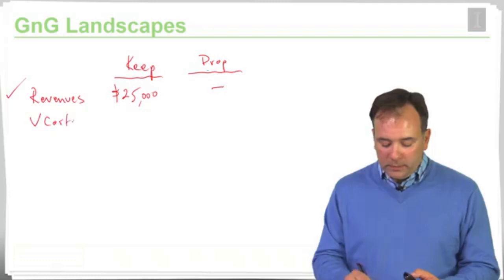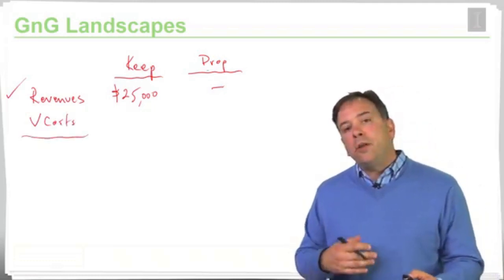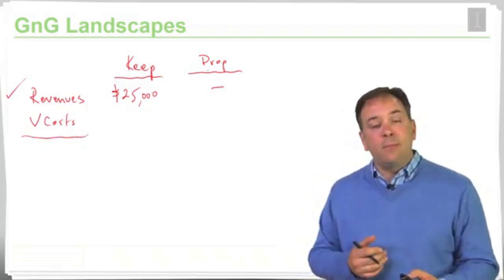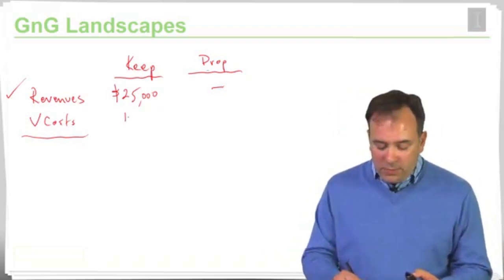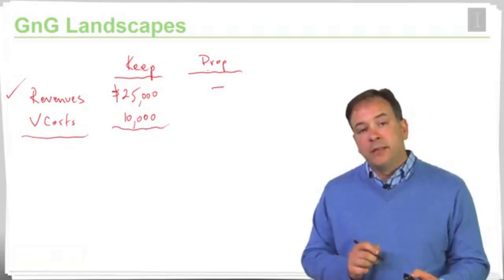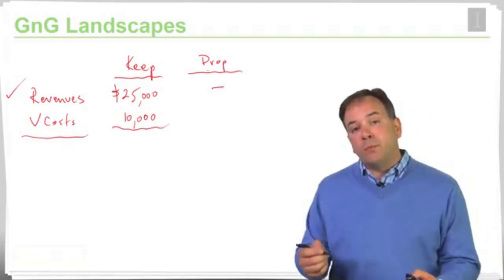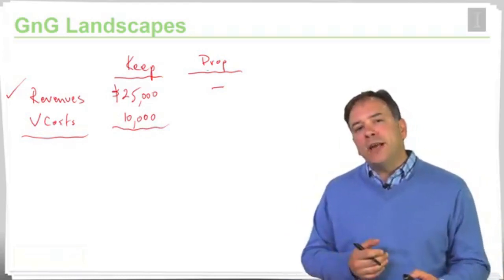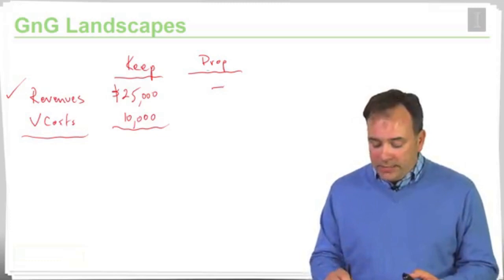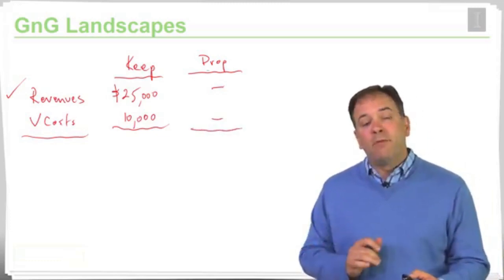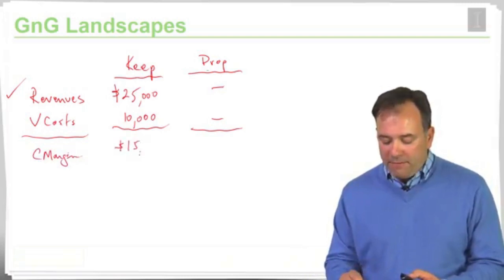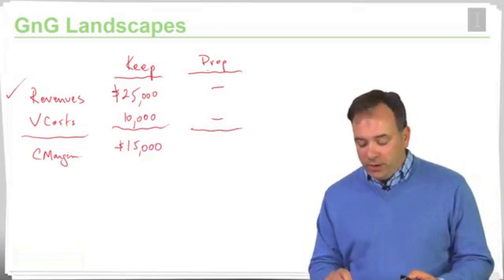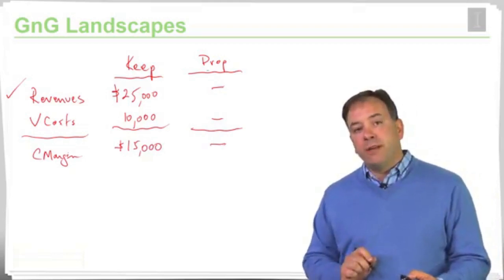The variable costs, by definition, correlate with the activity of interest that we're engaged in, and that is having this product line around. So if we were to keep the product line, let's assume that we were to incur the same $10,000 in variable costs. And if we were to drop this product line, we would no longer be engaged in activities that generate those variable costs. So our contribution margin, if we were to keep, we would have $15,000 in contribution margin, and zero in contribution margin if we were to drop this line.